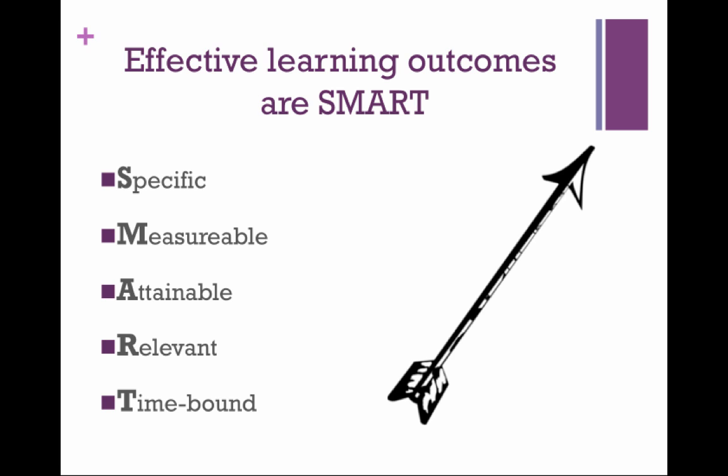Effective learning outcomes are what's called SMART. They should be specific and measurable — consider how it is you assess that learning. The student should be able to accomplish the task given the expected prior knowledge and experience and what they learn in this class. The outcome should be relevant to the course and to the students, and the student should be able to accomplish and demonstrate it within the timeframe available.